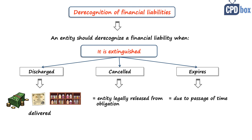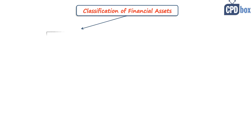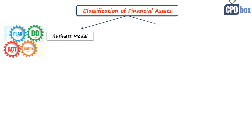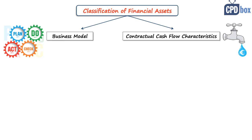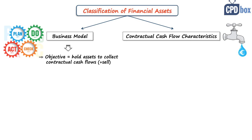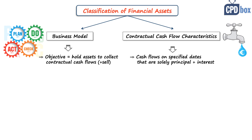Now let's see how IFRS 9 classifies financial assets. They are normally classified based on both the entity's business model for managing financial assets and the contractual cash flow characteristics of the financial asset. The business model tells you why the asset is held — the objective can be to hold assets to collect contractual cash flows, or alternatively to collect cash flows and also sell the asset. The contractual cash flow test means that contractual terms give rise on specific dates to cash flows that are solely payments of principal and interest on the principal amount outstanding.